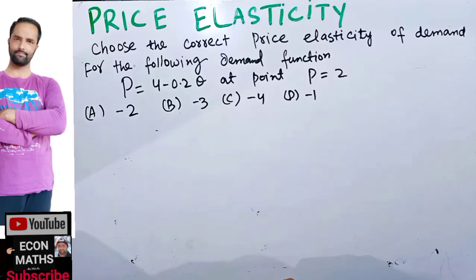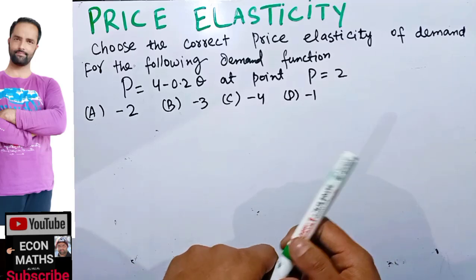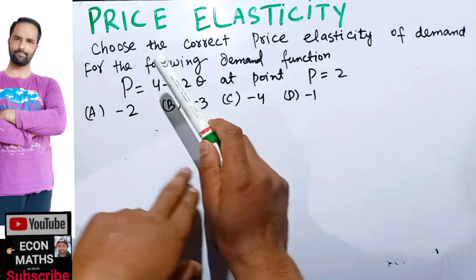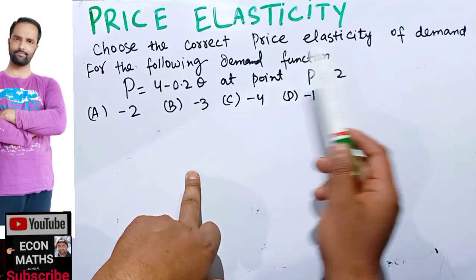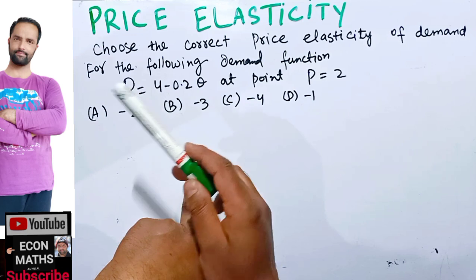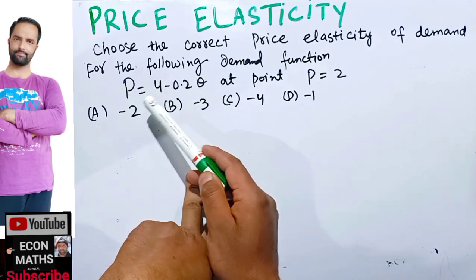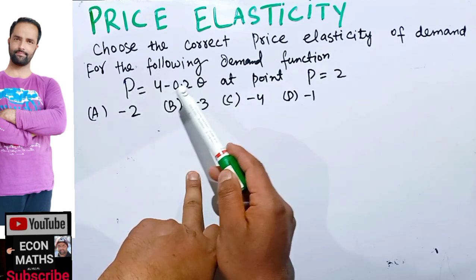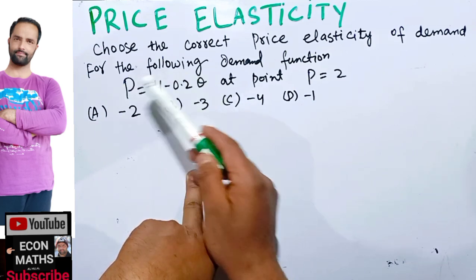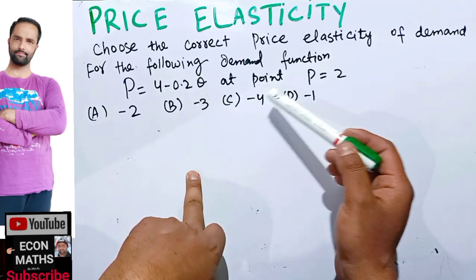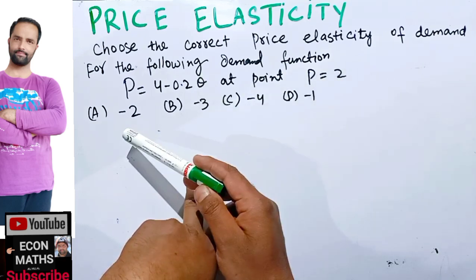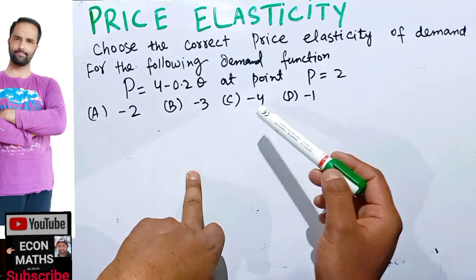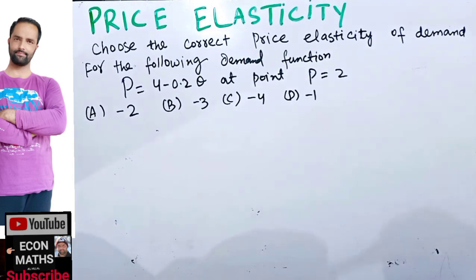In this video we will try to solve a question asked regarding price elasticity. The question is: choose the correct price elasticity of demand for the following demand function. We are given an inverse demand function: p is equal to 4 minus 0.2q, where p is the price and q is the quantity, at p equals 2. The options are minus 2, minus 3, minus 4, and minus 1.